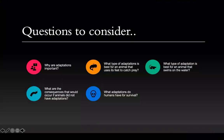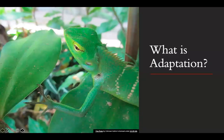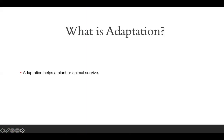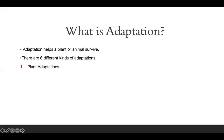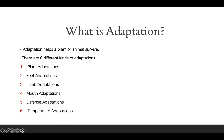So here are some questions to consider: Why are adaptations important? What type of adaptation is best for an animal that uses its feet to catch prey? What type of adaptation is best for an animal that swims on the water? What are the consequences that would occur if animals did not have adaptations? And what adaptations do humans have for survival? So, adaptation helps a plant or animal survive. There are actually six kinds of adaptations we're going to learn in this PowerPoint: plant adaptations, feet adaptations, limb adaptations, mouth adaptations, defense adaptations, and temperature adaptations.